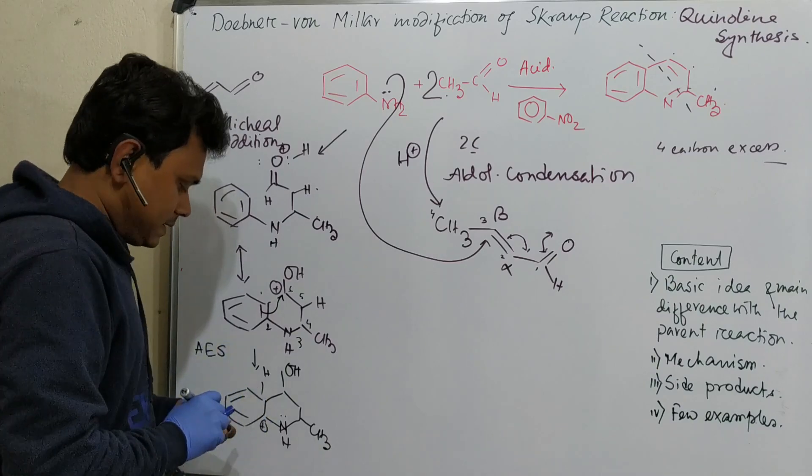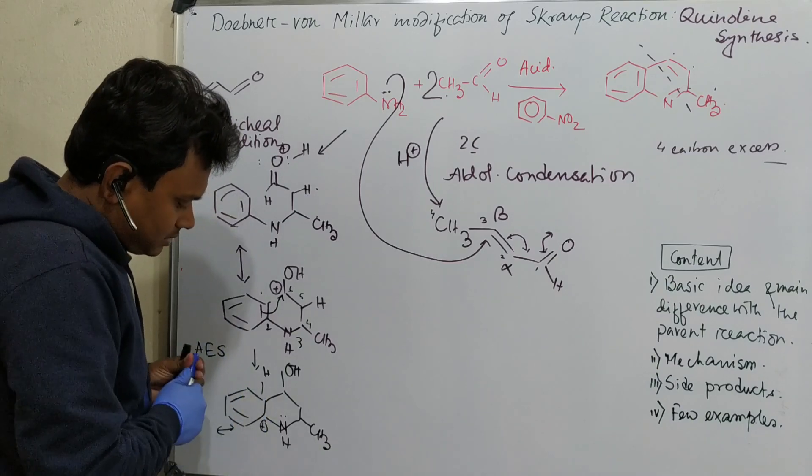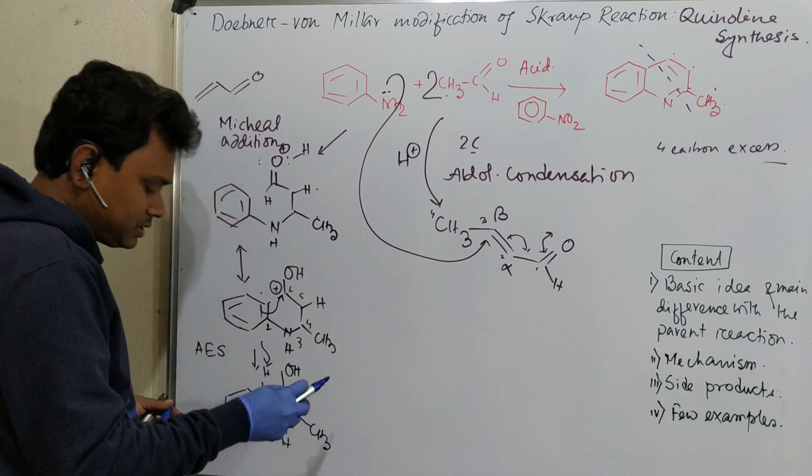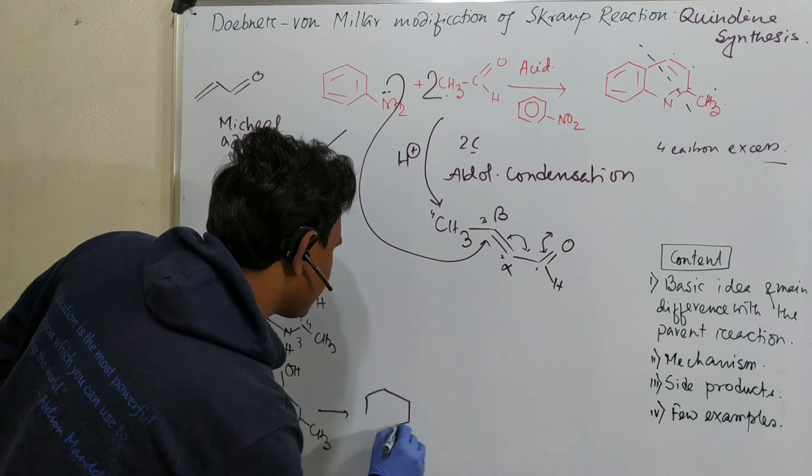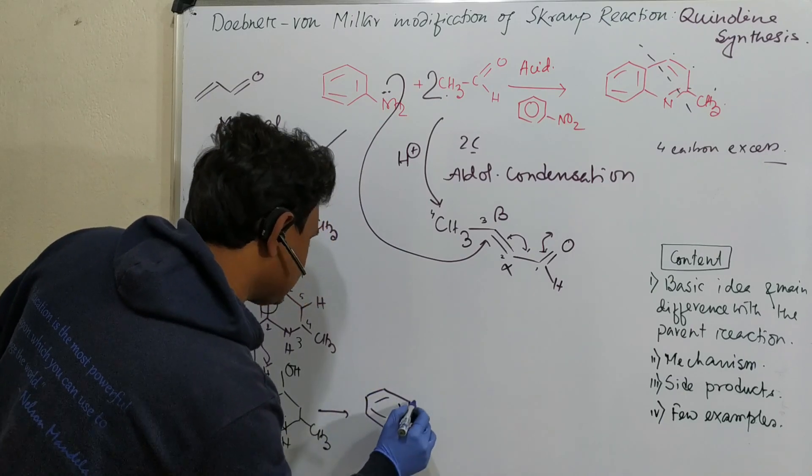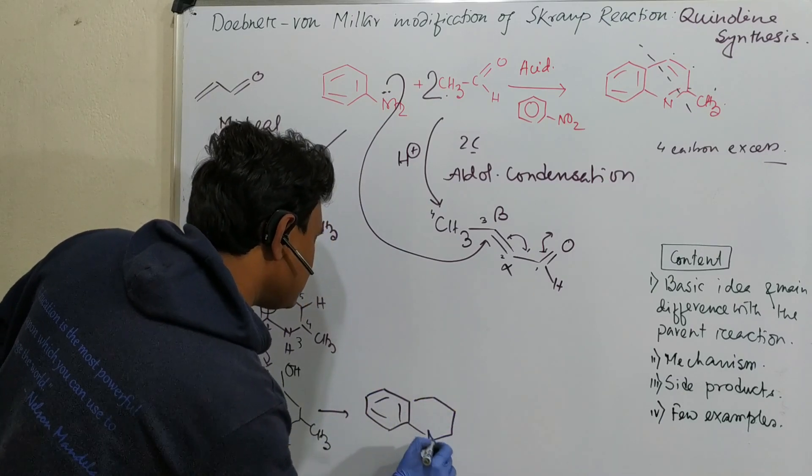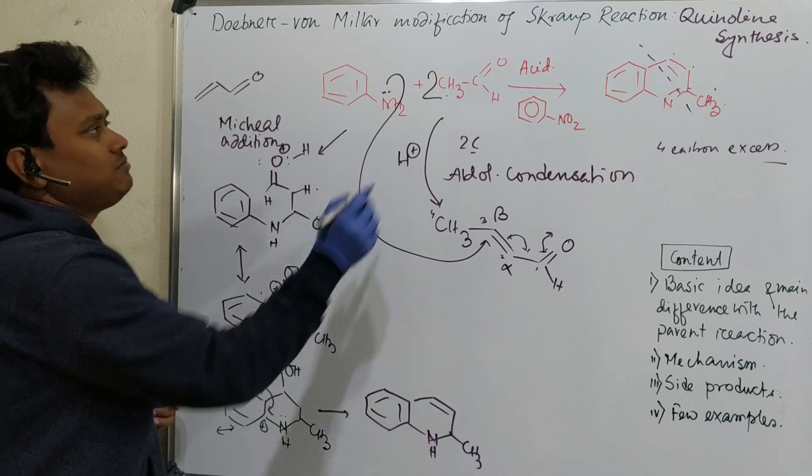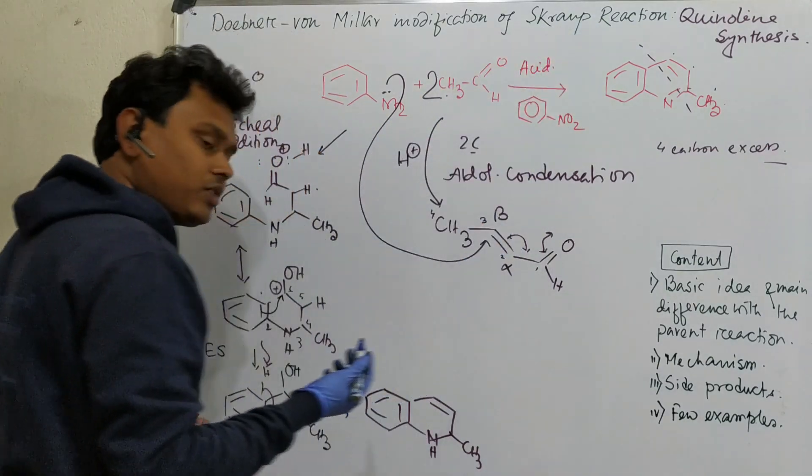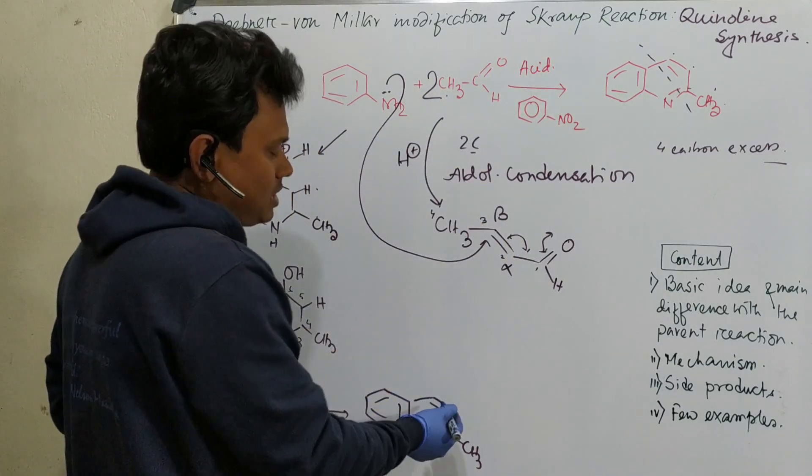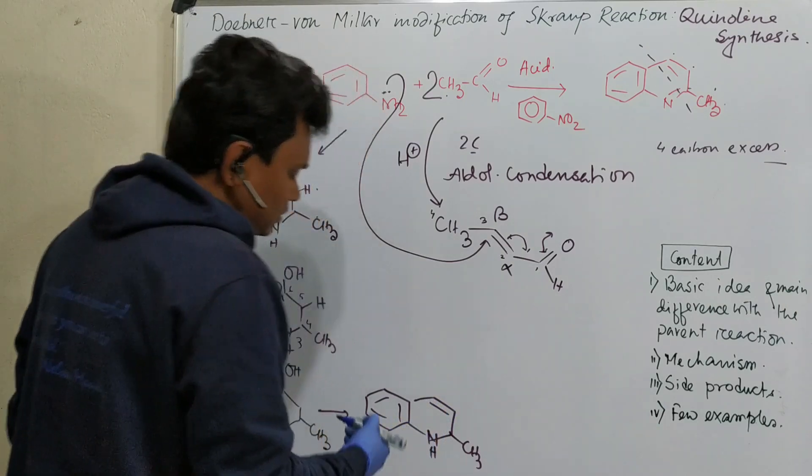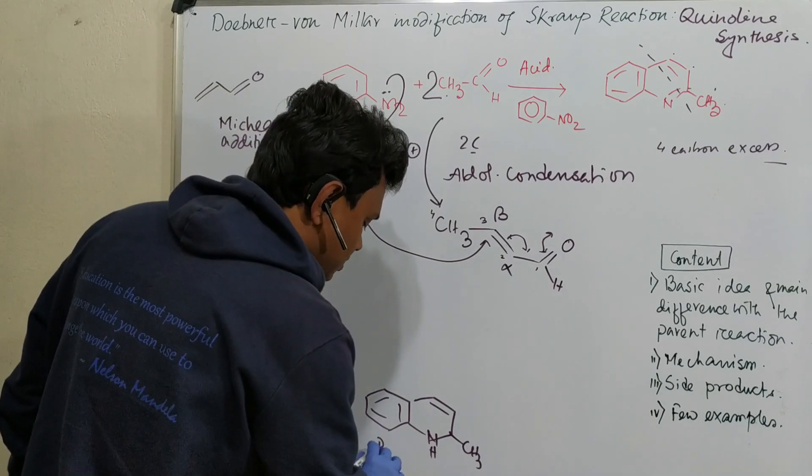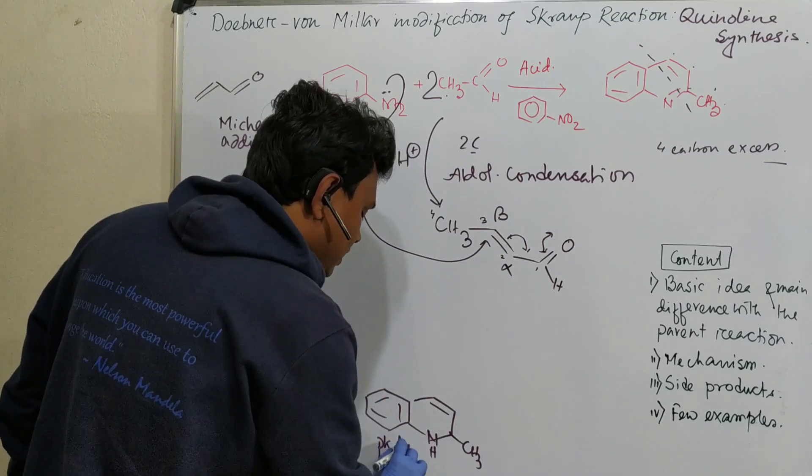So I am not going to discuss this part. So next step what happens? This proton is getting abstracted in order to gain the aromaticity back. So what it resulted? It resulted this. This CH3. This. Mechanism is similar like Skraup reaction. So if you have watched the previous video, mechanism part you can skip. So fine. Now question is this is the product of this process.